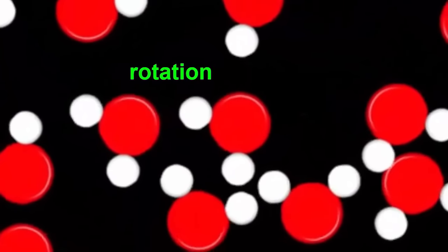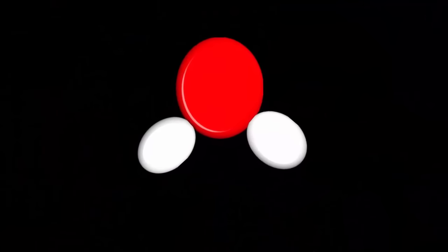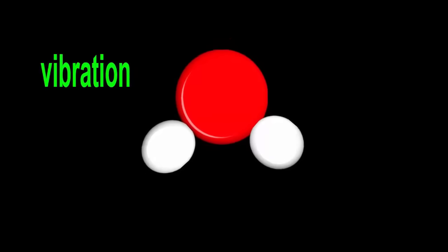And there's a third way that isn't shown, like this. What word would you use to describe this way of moving? The atoms within the H2O molecule are moving backwards and forwards. So that's another kind of vibration.